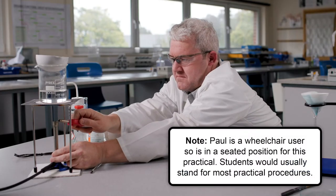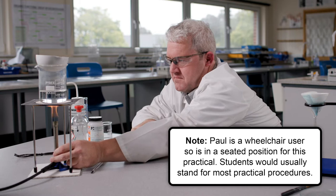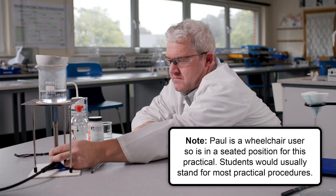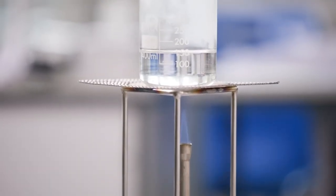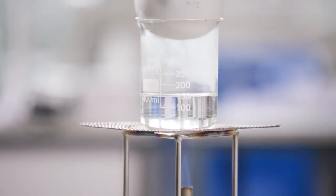This experiment also involves heating with a Bunsen burner. Extra precautions must be adhered to: tying hair back, making sure there are no loose articles of clothing or any other flammable materials nearby.